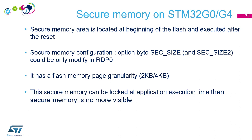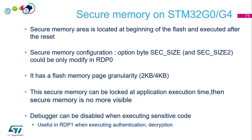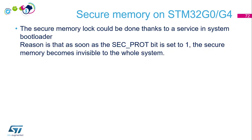The secure memory can be locked at application execution time — then the secure memory is no longer visible. You just have to write in the flash register. We can also use services from the RSS or the system bootloader. The debugger can be disabled when executing some sensitive data, which can be really useful at RDP level 1 when you want to perform secret operations like authentication or decryption.